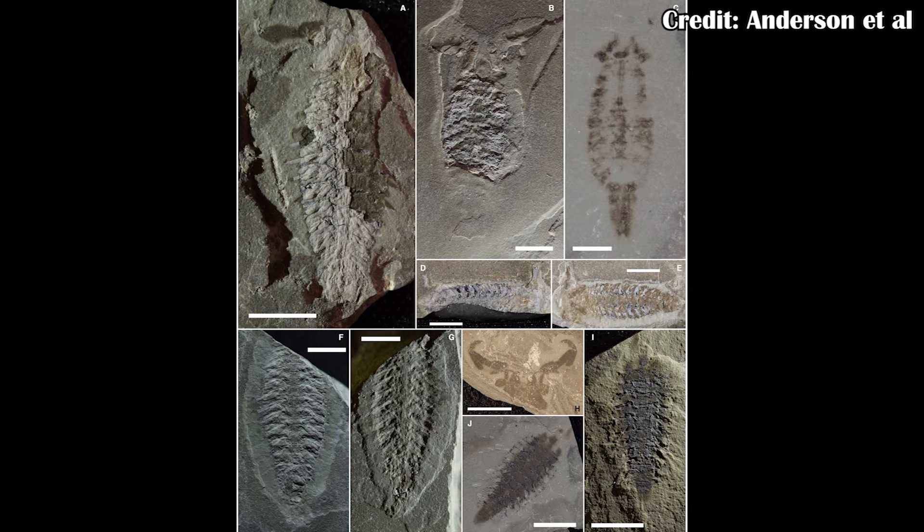We'll get into some of those other features later on, but first we're going to look at just what happened when they put it into a phylogeny. Essentially, they write down characteristics it has — like how many eyes it has, where those eyes are — and put it into a complex matrix and statistical program, and then run it through the computer and see where it ends up.